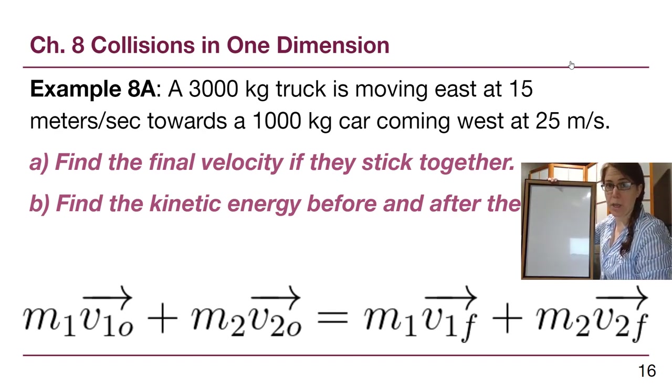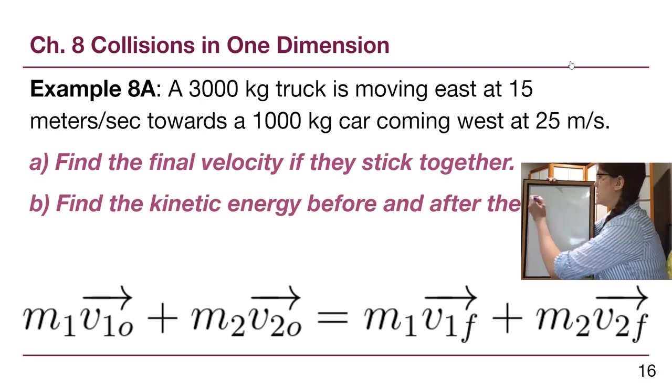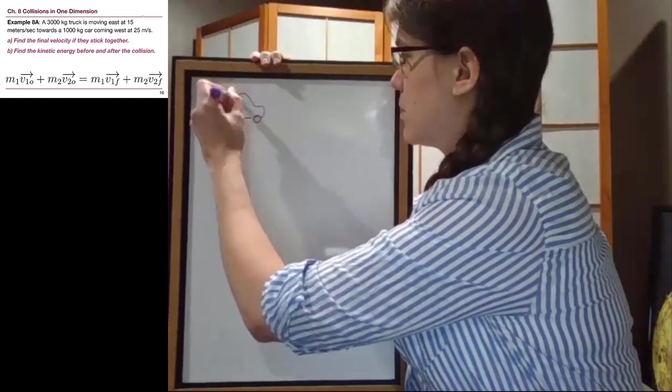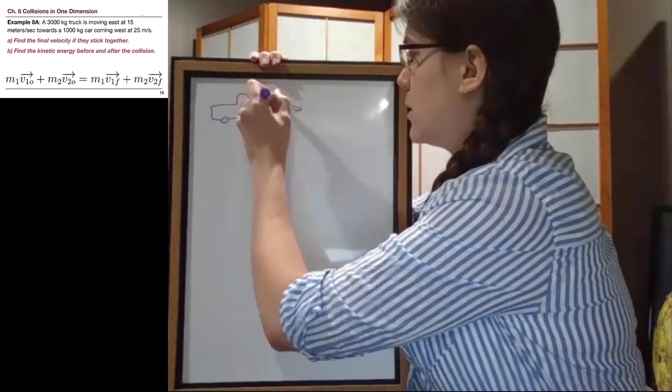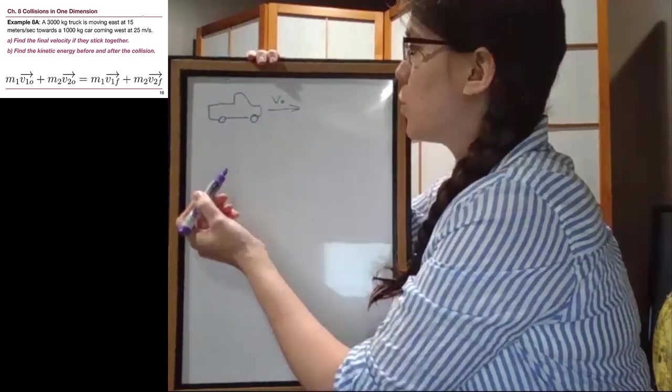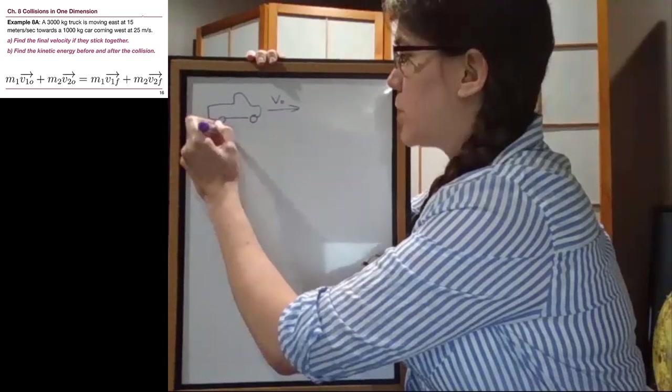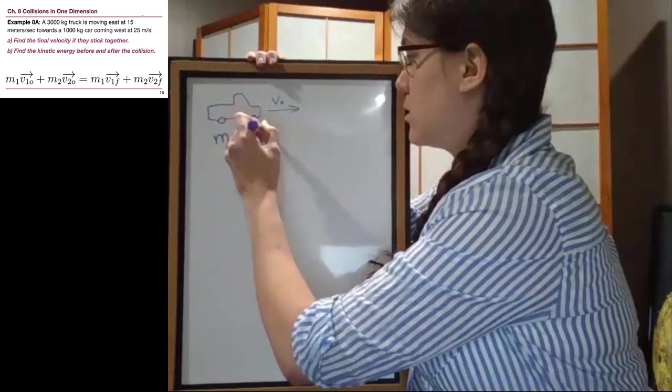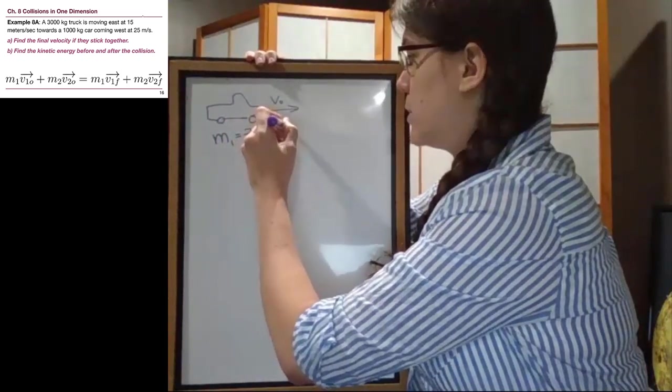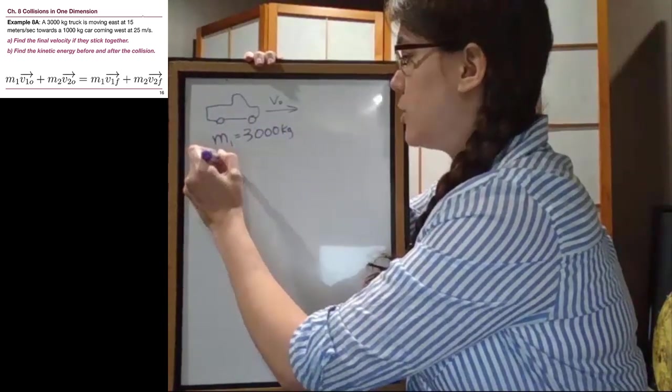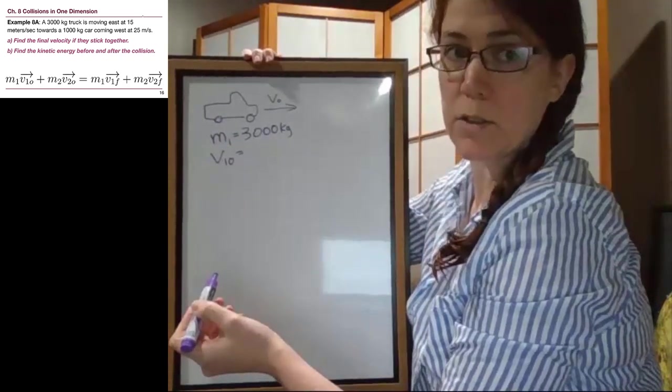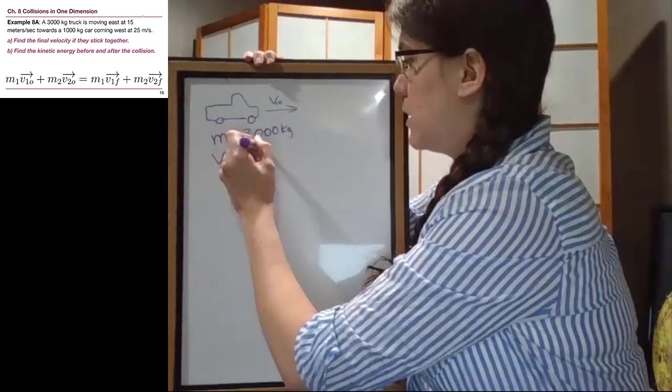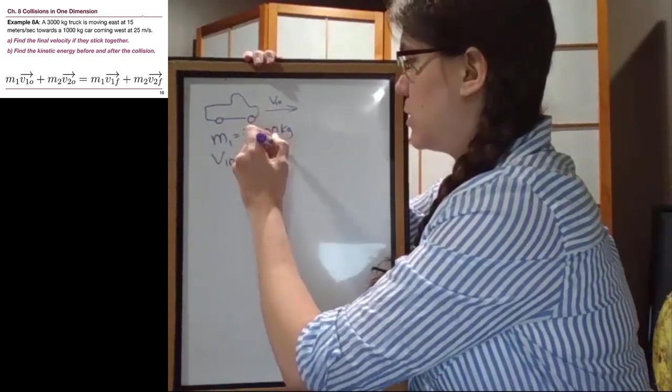So here we have a truck that is moving east, and we're going to call this object number one. The mass of that truck is 3,000 kilograms, and the initial velocity of that truck is 15 meters per second to the east, which means positive 15 meters per second.